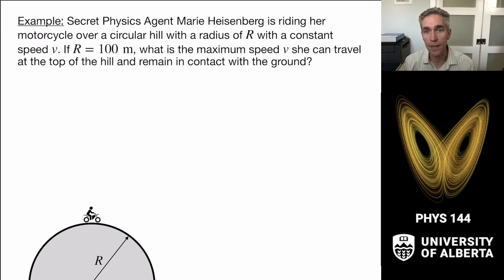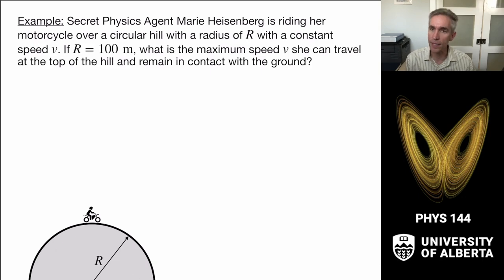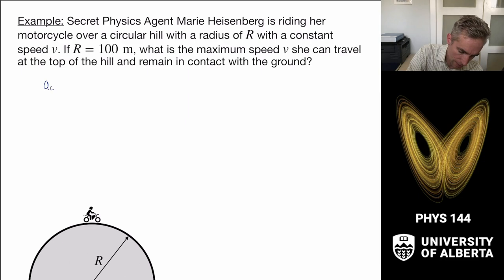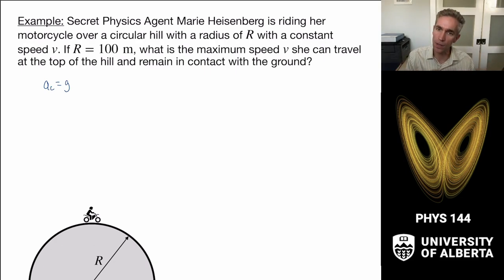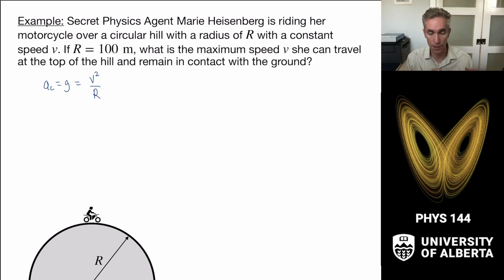This is a fairly common problem. At the top of the hill, we'll later learn about normal forces and gravitational forces, but right now we want to think about this in terms of accelerations. Everything near the earth experiences acceleration downward from gravity, and the condition we want is that at the top of the hill, the maximum acceleration Marie can experience is that her centripetal acceleration a_c needs to be provided by gravity. So gravity provides all of the centripetal acceleration, and for a simple circular path, that centripetal acceleration equals v squared over r, using the uniform circular motion expression.